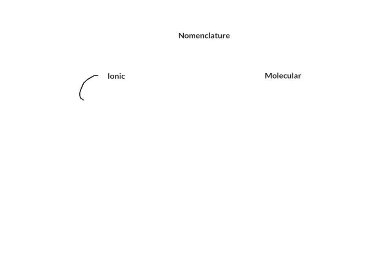Ionic compounds usually are composed of a metal and a non-metal. So the left-hand side of the periodic table, metals. The right-hand side of the periodic table, non-metals.